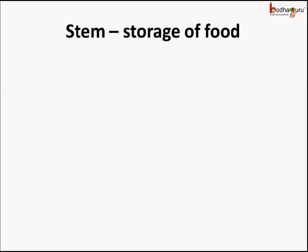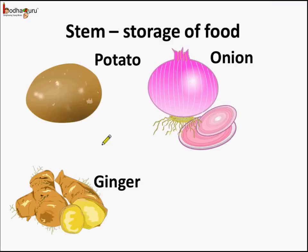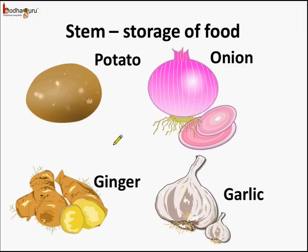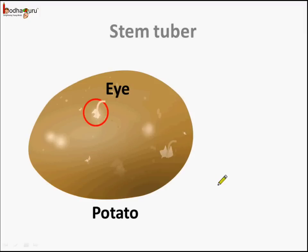Next, in certain plants the stem acts as a storage organ and stores the extra food. For example in the case of potato, onion, and ginger and garlic too. You know in the case of potatoes we see eyes. Eye is nothing but a bud which can grow into a new plant. This type of underground stem which becomes swollen due to storage of food is called a tuber. So potato is an example of a tuber, which is an underground stem that stores food.